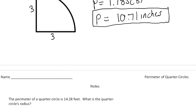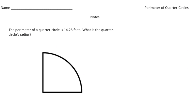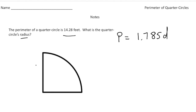Let's do one more problem together, and this one's a little more confusing. It says the perimeter of a quarter circle is 14.28 feet — what is the quarter circle's radius? We're looking for the radius, but we'll use the same formula: perimeter equals 1.785 times the diameter. They gave us the perimeter, and our goal is to find the radius. So I substitute 14.28 in for the perimeter: 14.28 equals 1.785 times the diameter.